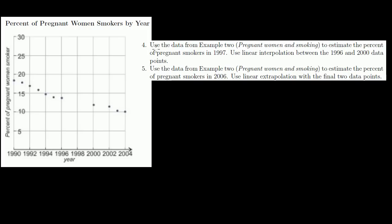Part four: use the data from example two to estimate the percentage of pregnant smokers in 1997, using linear interpolation between the 1996 and 2000 data. I draw a line between those two data points and find 1997, which falls right over there. Reading across to the vertical axis, it looks a little bit more than 12.5% — my best estimate is about 13%.